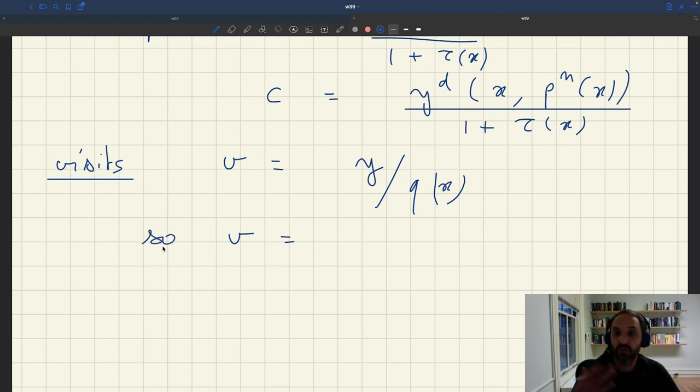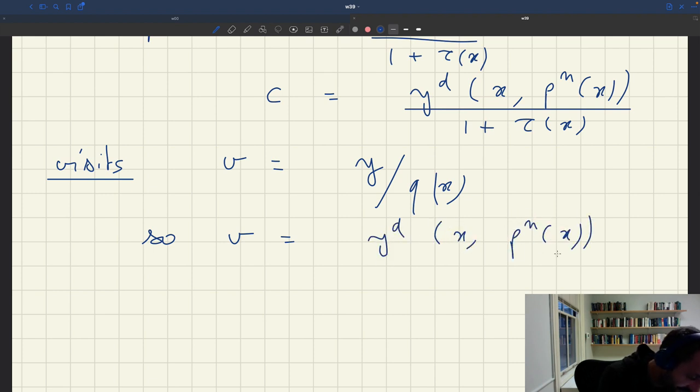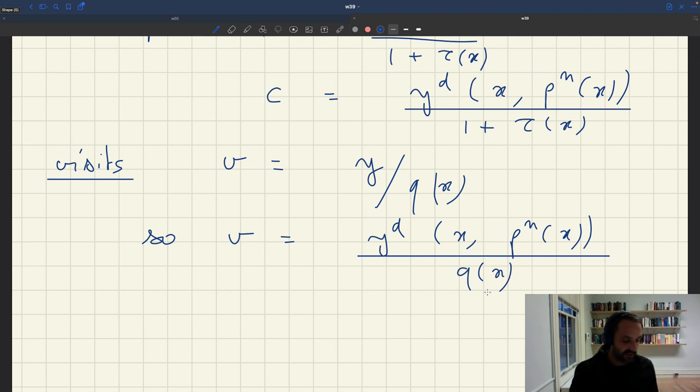But then y is itself only a function of tightness. So at the end, the number of visits would be only determined by tightness. So given the tightness, we'll be able to get the number of visits.